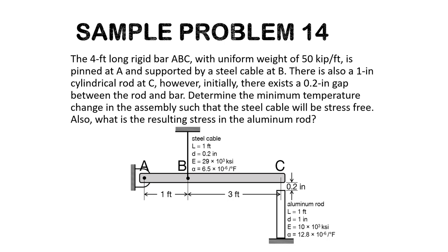Good day! This is sample problem 14 for strain and our second sample problem for thermal stress. I will read the problem first. The 4-feet long rigid bar ABC with uniform weight of 50 kg per foot is pinned at A and supported by a steel cable at B. There is also a 1-inch cylindrical rod at C.